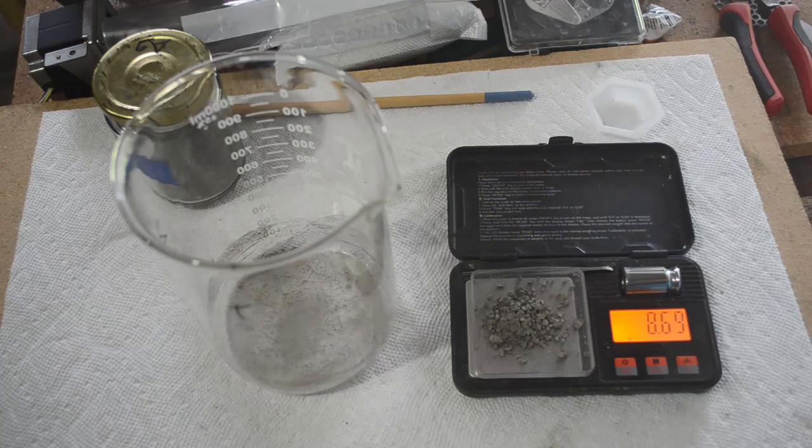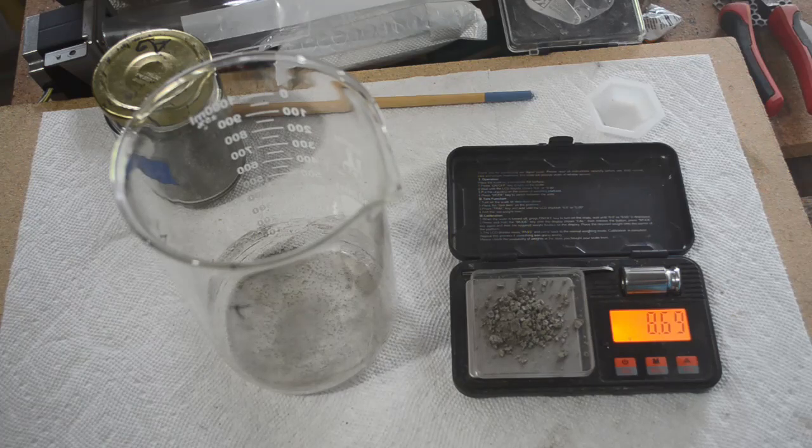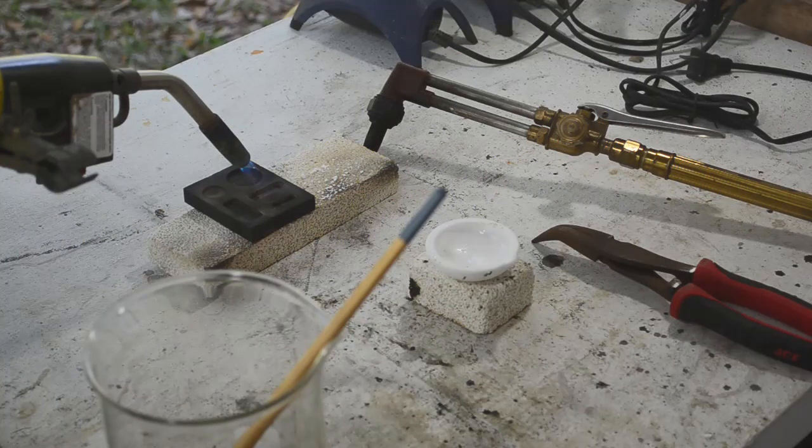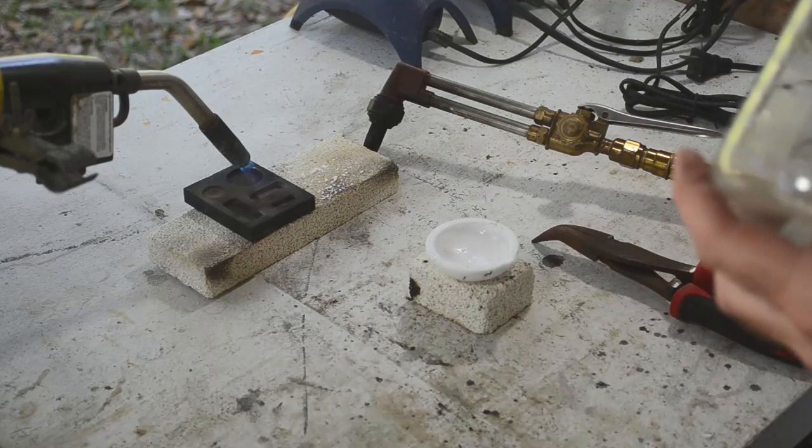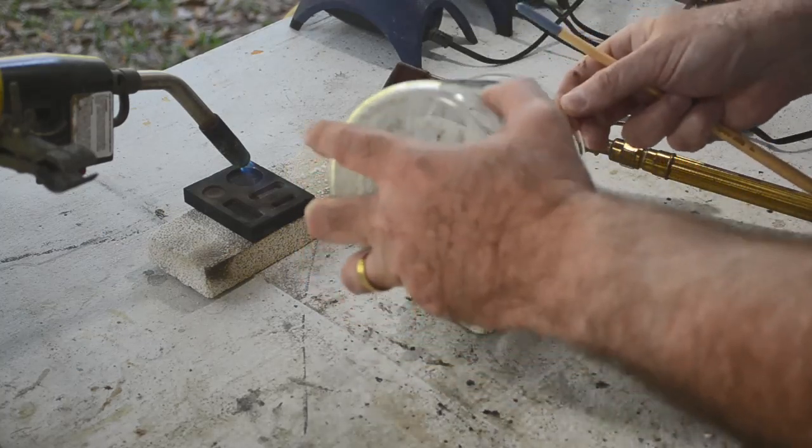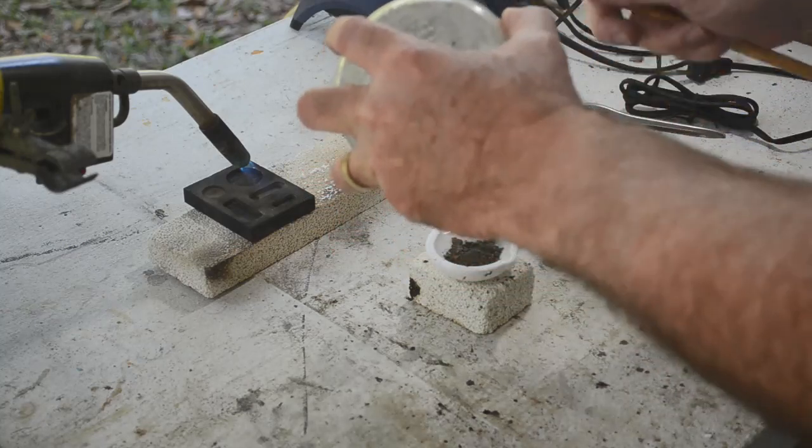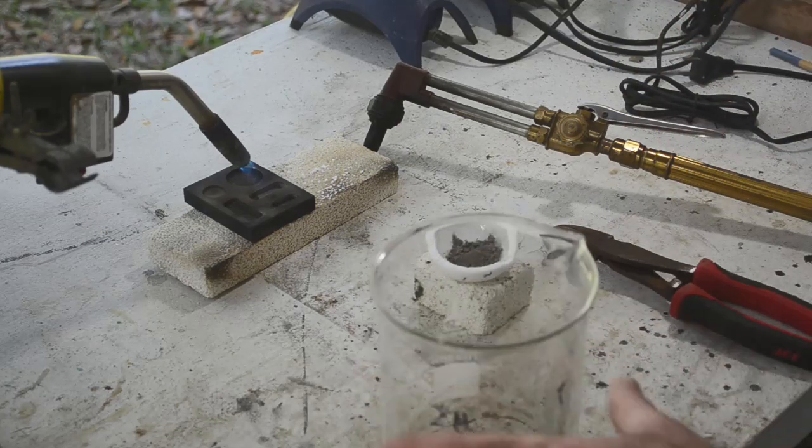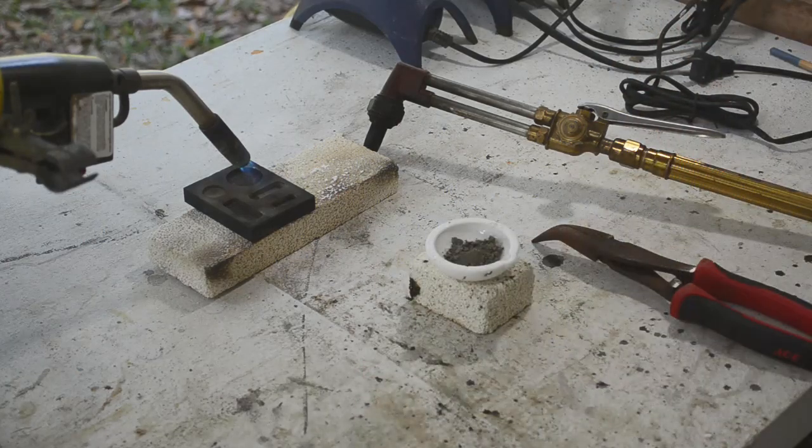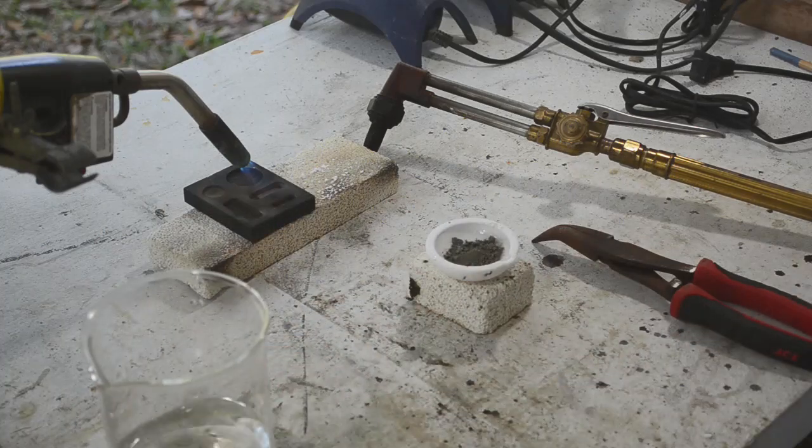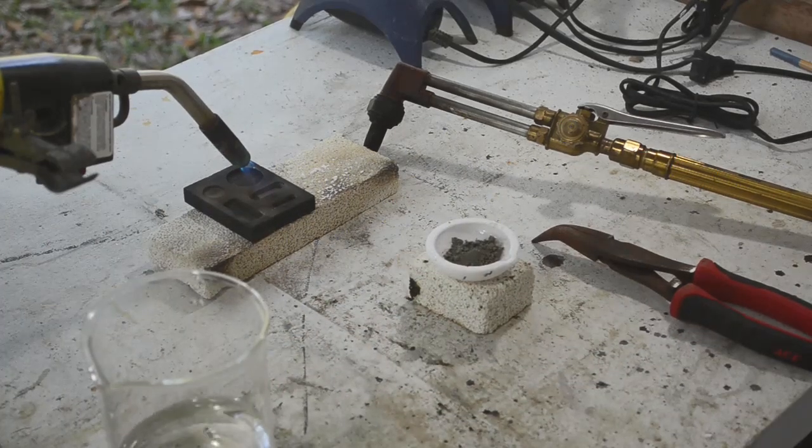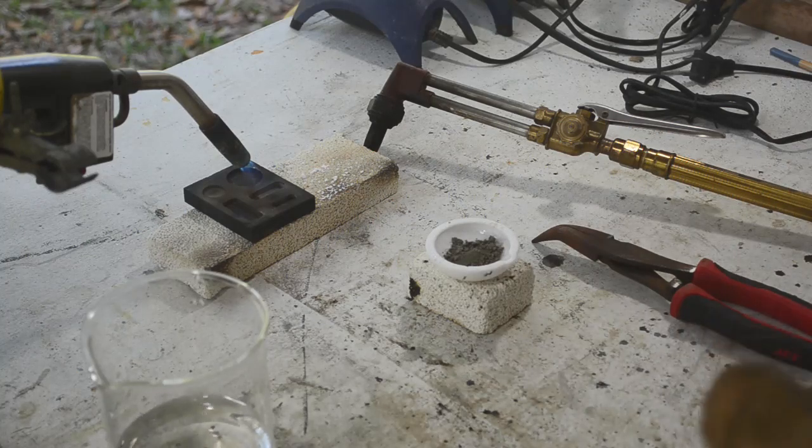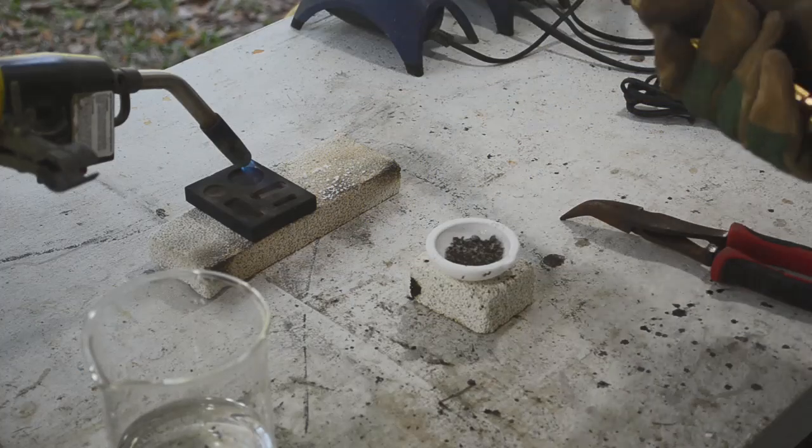Hey, what do you say we melt this down and see what kind of a button we're going to get out of it using this method. See if it's a nice button or not. Alrighty, let's try melting down this silver. Got a well-glazed crucible here. Some water to quench the thing in afterwards. And let me get my gloves on so I don't burn myself. Let me get the torch lit here.